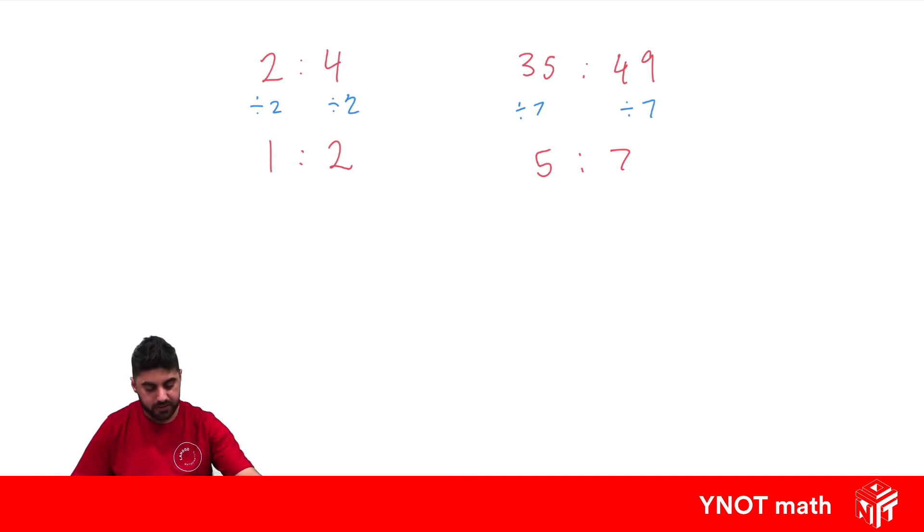We can even simplify ratios with three numbers. 16 to 24 to 32. So what's the highest common factor between all these numbers?